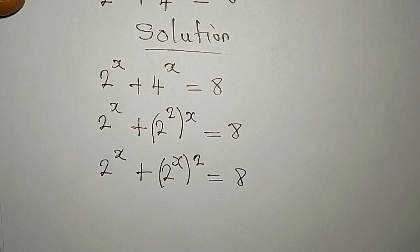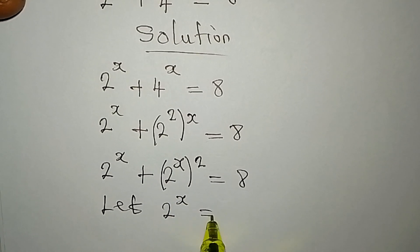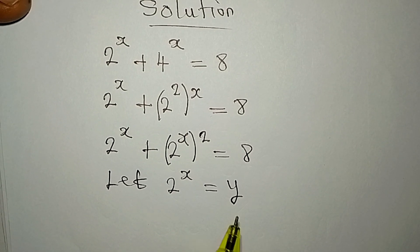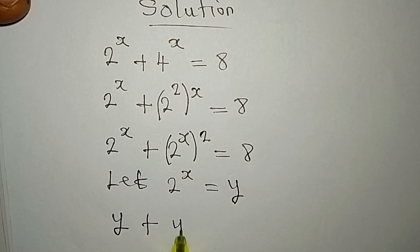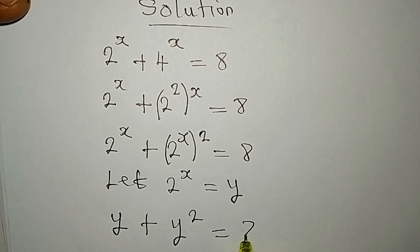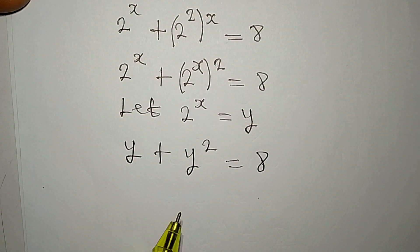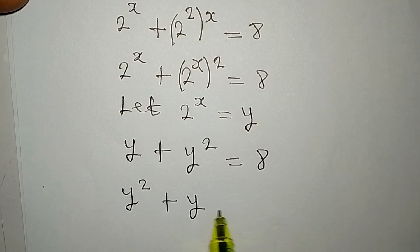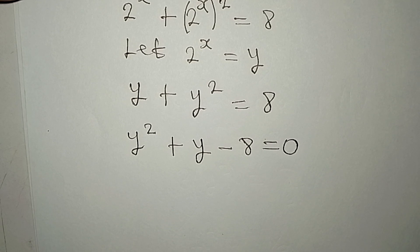We have 2 to the power of x appearing in two places, so let's say 2 to the power of x equals y. Wherever I find 2 to the power of x I'll write y. So we now write y plus y squared equals 8. Remember we always write the highest power first, so we get y squared plus y minus 8 equals 0 — a quadratic equation.